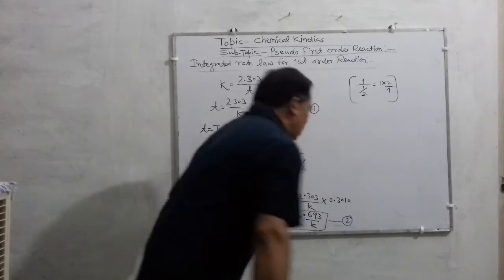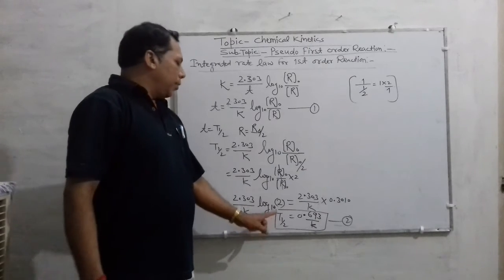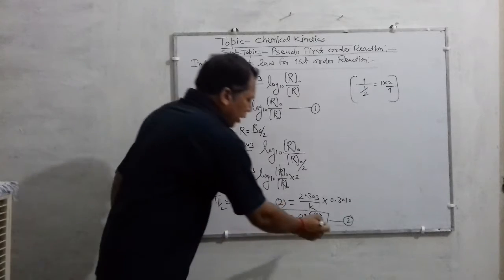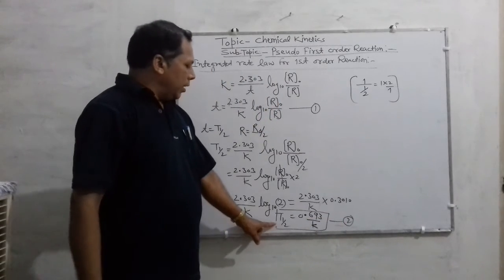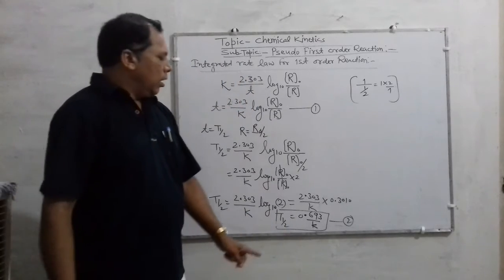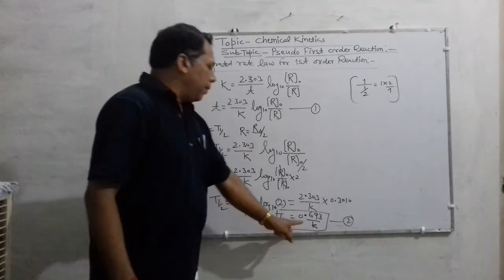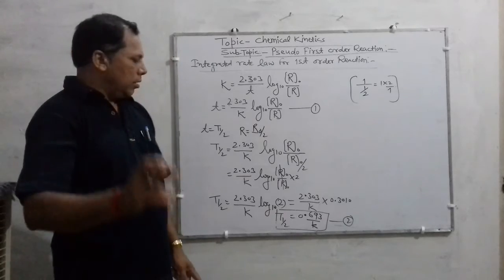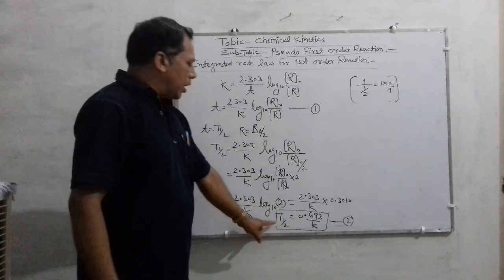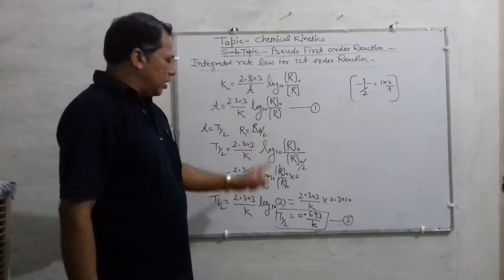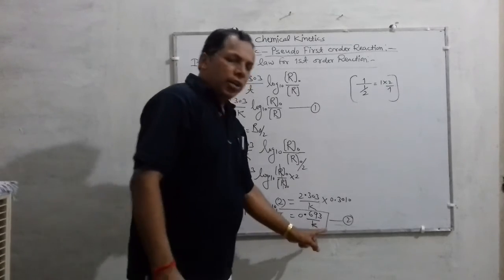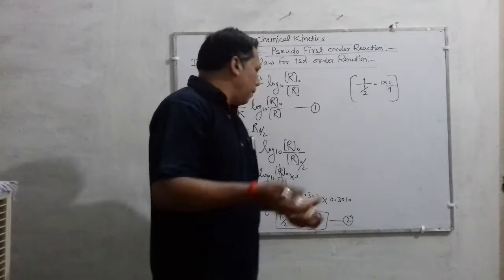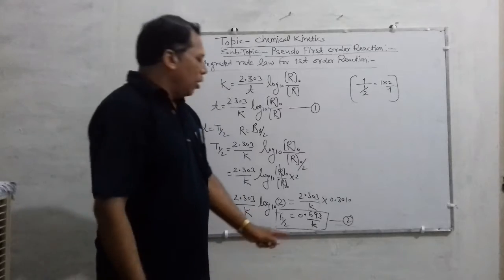From equation 2, it is very clear that the half-life period for a first order reaction is completely independent of concentration, because there is no concentration term present in expression 2. The half-life period for first order reaction does not depend upon the concentration of the reactant, but it is inversely proportional to the rate constant.